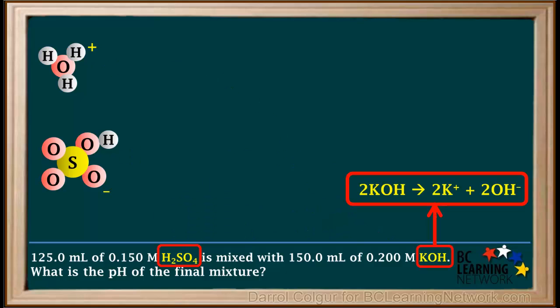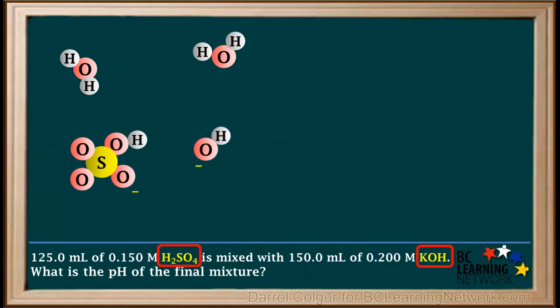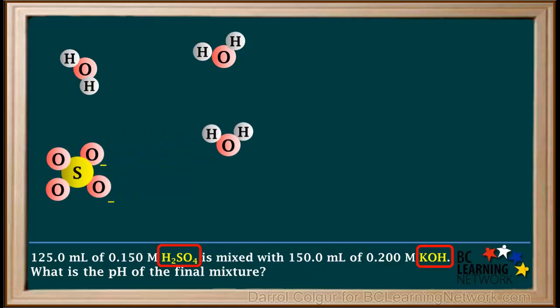When the strong base, KOH, dissociates in water, it forms K plus and OH minus ions. Here we doubled everything in the equation. We show models of the two hydroxide ions from the KOH. One of the hydroxide ions collides with a hydronium ion and takes away a proton to form two water molecules. The other hydroxide ion collides with a hydrogen sulfate ion and takes a proton from it to form a water molecule and a sulfate ion. The sulfate ion has the formula SO4 2 minus.